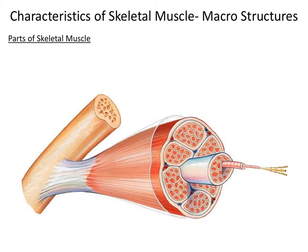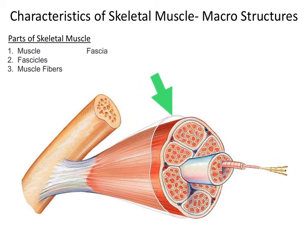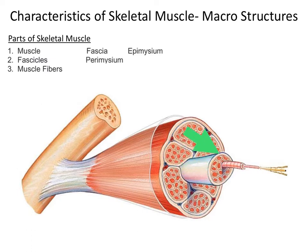The first structure is the muscle. A muscle consists of a bundle of fascicles, and fascicles consist of a bundle of muscle fibers. The dense fibrous connective tissue covering that surrounds the muscle is called the fascia, or epimysium. The connective tissue covering that covers the fascicles is called the perimysium. And lastly, the connective tissue covering that covers muscle fibers is called the endomysium.